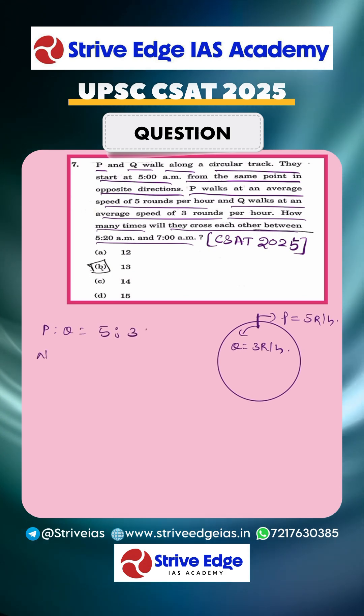the number of meeting points, they are in opposite directions. So number of meeting points equals 5 plus 3. That is 8 meetings per hour.